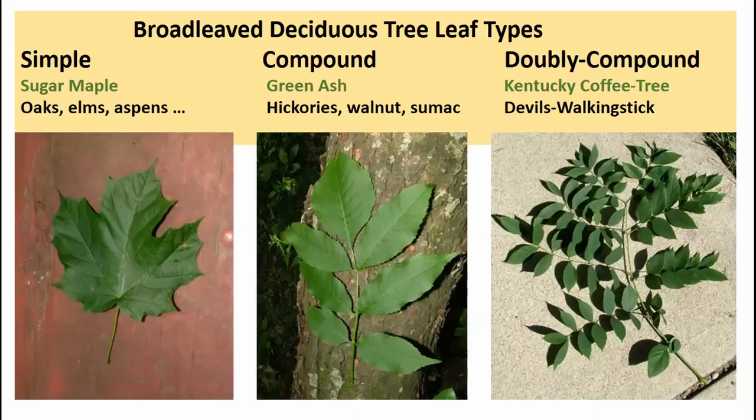Once we know leaf arrangement, we can also look at what type of leaves we're dealing with — simple, compound, or doubly compound. Simple leaves, the most common category, include maples, oaks, elms, and aspens. It's a simple leaf stem and a single leaf blade, though with lots of variation in size and shape.